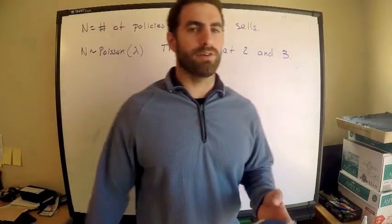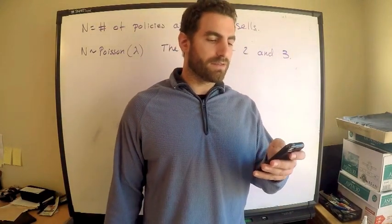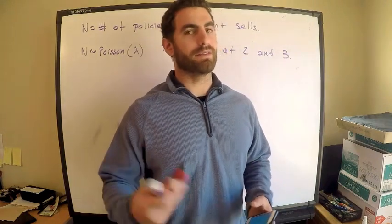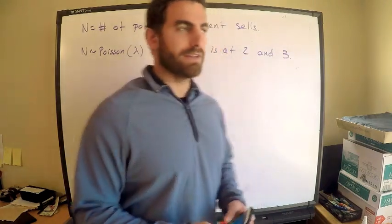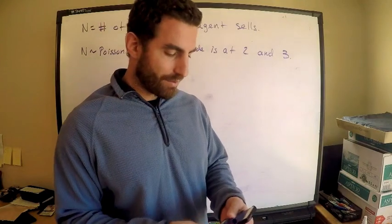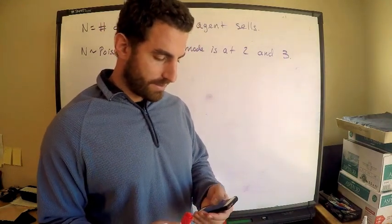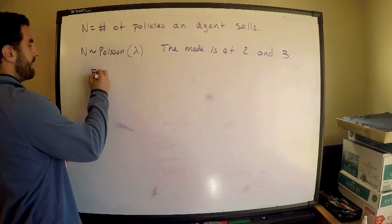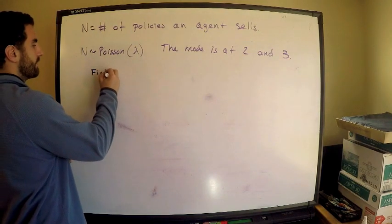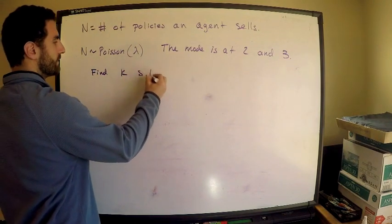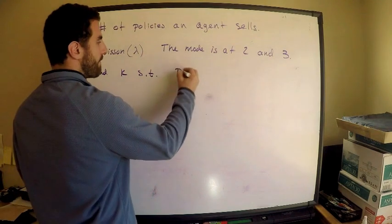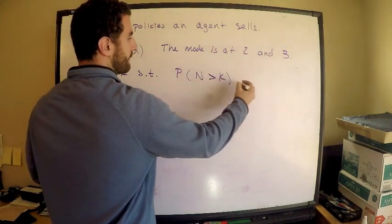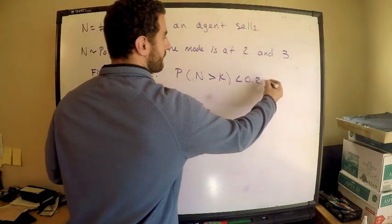Read that part a few times yourself if you need to. The smallest number such that the probability of selling more than K policies — N is the number of policies sold — if I sell more than K, that probability is less than 0.25. We want to find K such that the probability of selling more than K is less than 0.25.